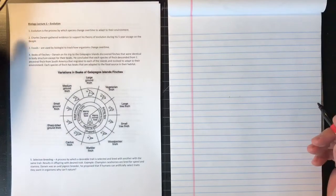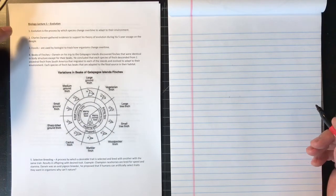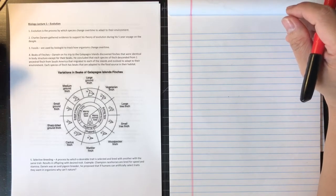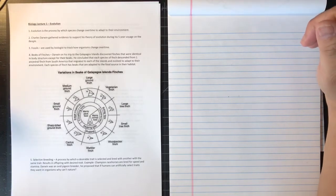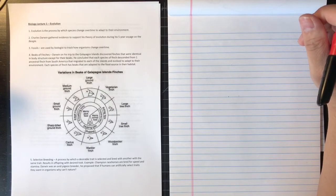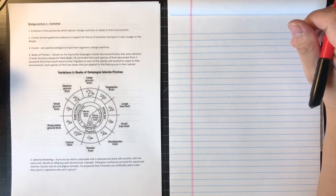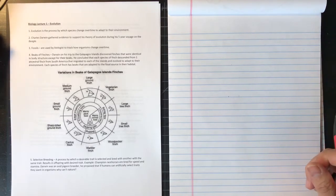Alright, so number one: evolution is the process by which species change over time to adapt to their environment. That's exactly what evolution is. However, organisms are able to adapt to their ever-changing environment. If organisms can't adapt to their environment, they'll go extinct. Therefore, the fact that we still have organisms out there today means that organisms must have been able to evolve to adapt to their environment.